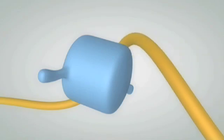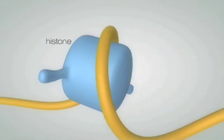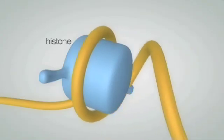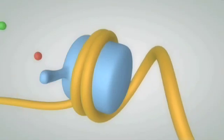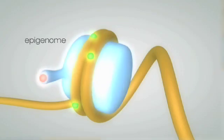The DNA in our bodies is wrapped around proteins called histones. Both the DNA and histones are covered with chemical tags. This second layer of structure is called the epigenome.